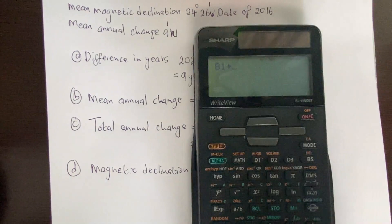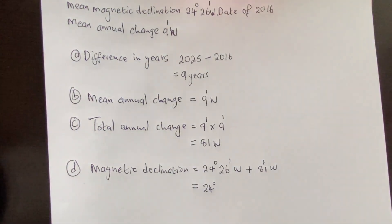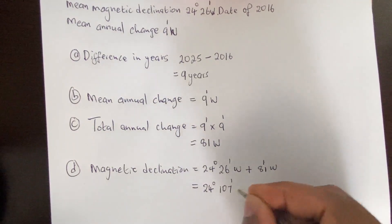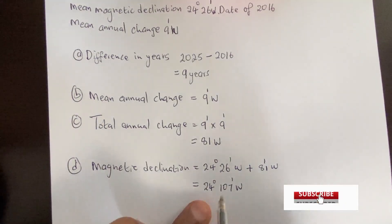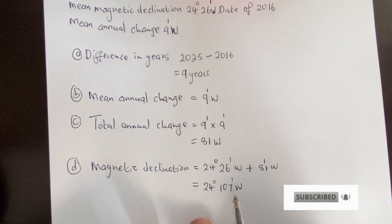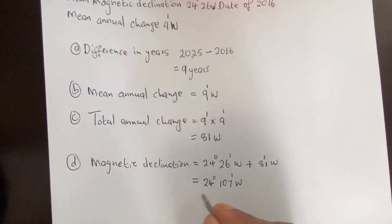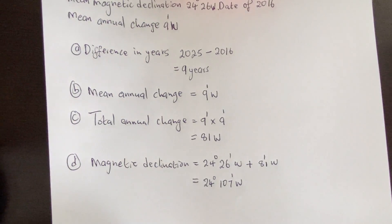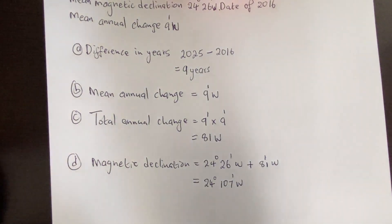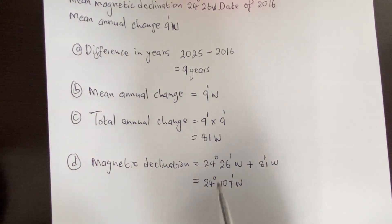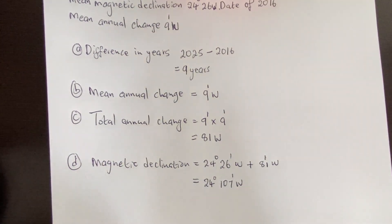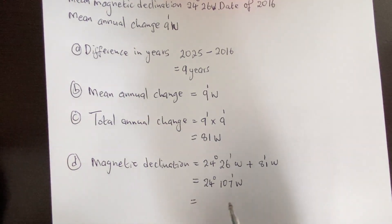Working this out: we add the minutes first — 81 plus 26 equals 107 minutes westward. But this is not our final answer. As covered in previous videos, if the minutes are greater than 60, you subtract 60 and add one degree to your magnetic declination.